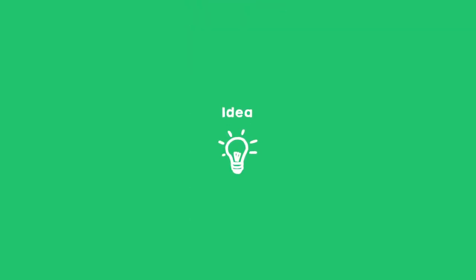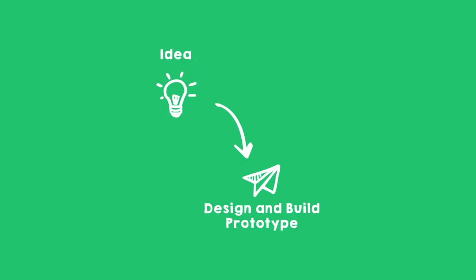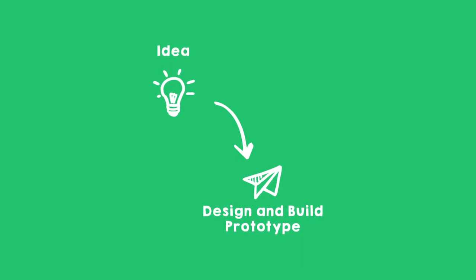Do you know how an app is made? It always starts with an idea. After the idea, the app, or a prototype — that is the test version of the app — is built. First, all the screens are drawn one by one, and then, usually by a programmer, they are programmed in code.